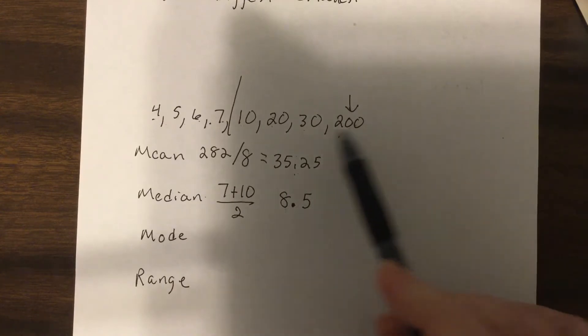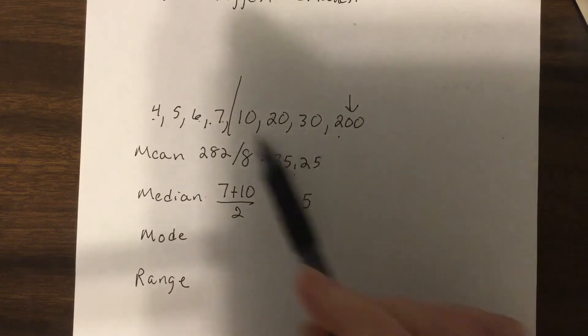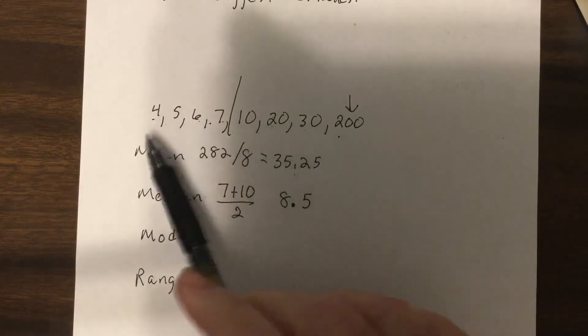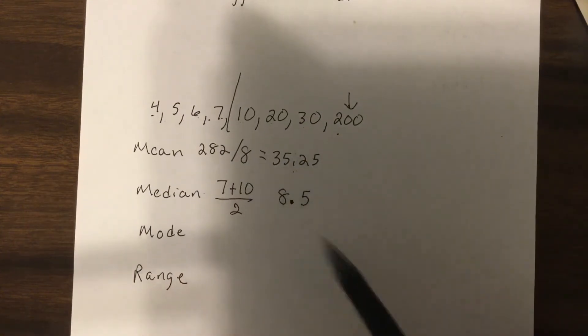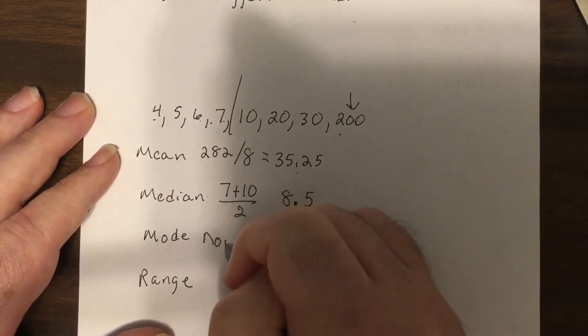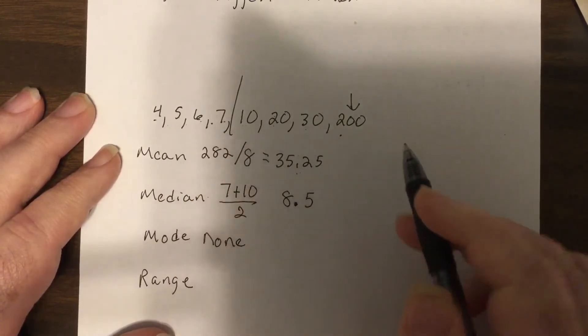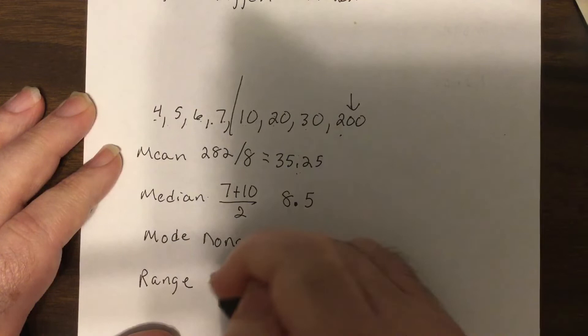When you have several really big or really small that don't match the data, the more these are going to be apart. Now the mode is none, there's nothing that repeats. And the range would be 200 minus 4, which is 196.